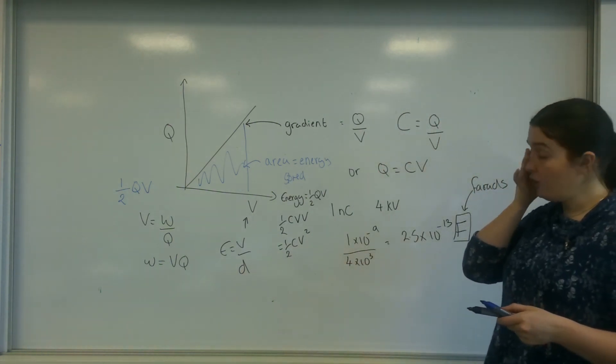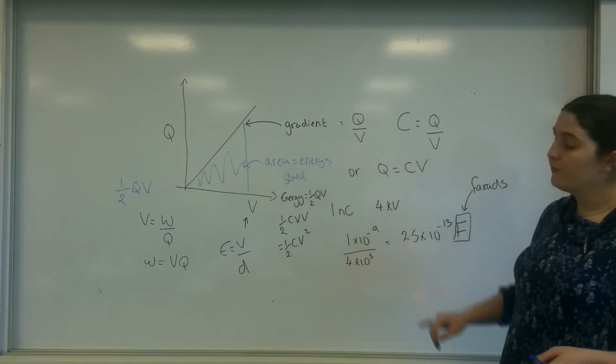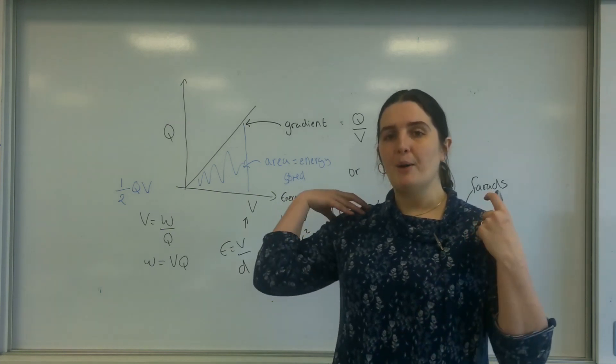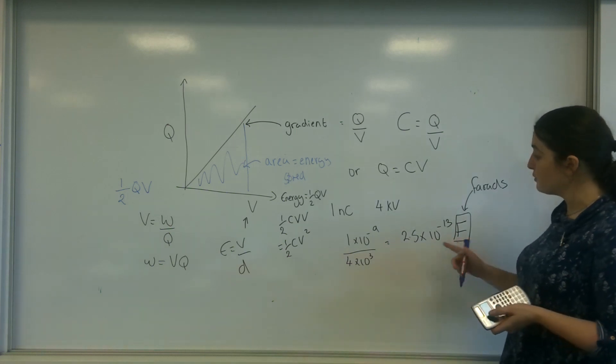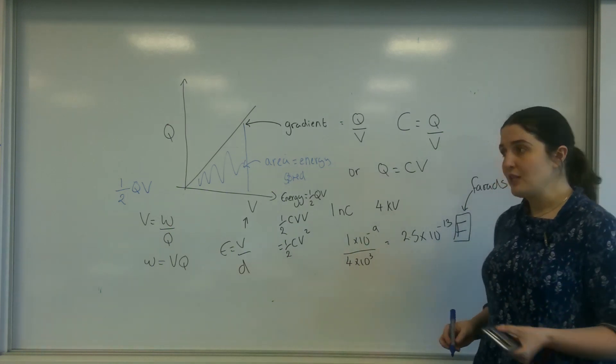So I had my question from before. I had a one nanocoulomb charge and a four kilovolts potential. Let's work out the energy that this capacitor is storing. So I've worked out the capacitance, which is 2.5 times 10 to the minus 13. Let's work out how much energy I'm storing.